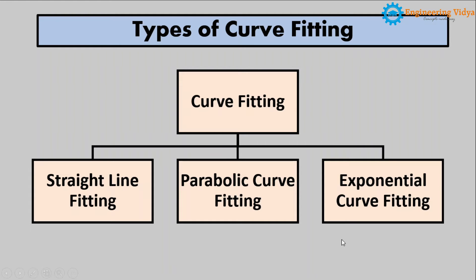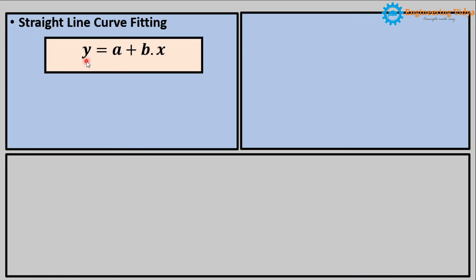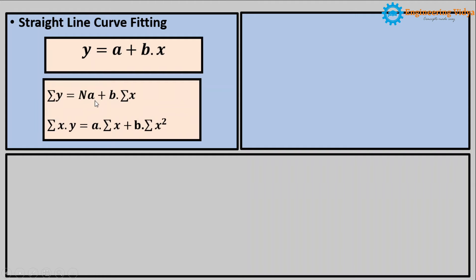Now we will see the mathematical expression of each type of curve. First, the mathematical expression of straight line curve fitting. Since we know the general equation of a straight line is y equal to a plus b into x, where a and b are constants. To calculate the value of a and b we can use these least square equations. Basically there are two equations — the first equation is summation of y